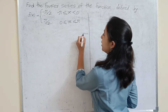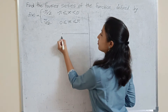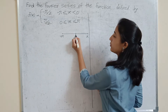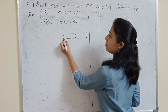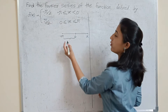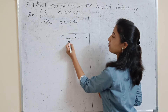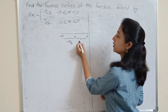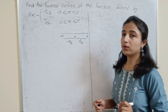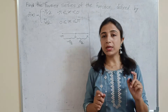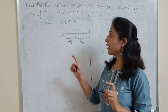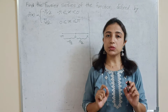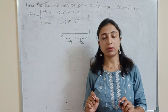Our interval starts from minus π to π with a break at 0. For minus π to 0, the value of the function is minus π/2, and for 0 to π, the value is π/2. Now if you observe this question, you might be thinking that here integration is minus π to π, which means we can use the even and odd function concept.